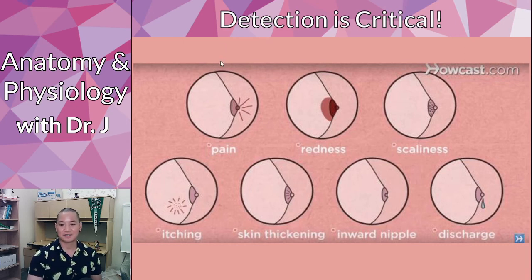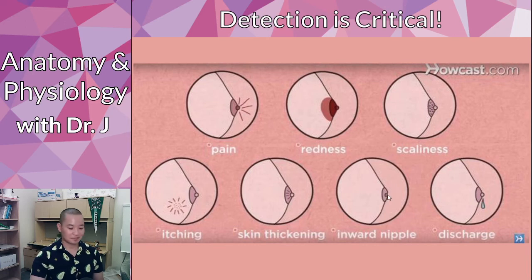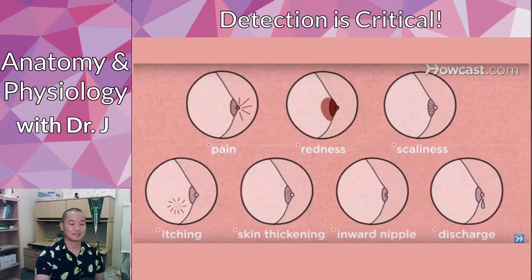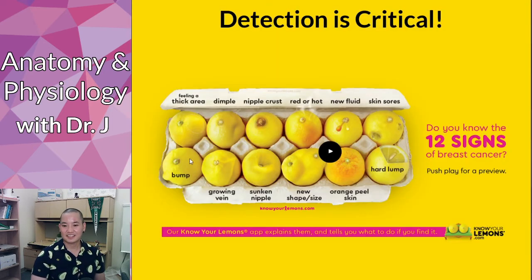Detection is critical. Symptoms can include pain, redness, and changes in texture of the breast or sensation — these don't necessarily mean breast cancer is present, but they have sometimes led to its detection. An inward nipple is another symptom: sometimes a nipple that protrudes can go from an outie to an innie as a tumor develops. Discharge when not lactating is also a sign — it's a different substance, sometimes a different color or consistency from typical lactation.